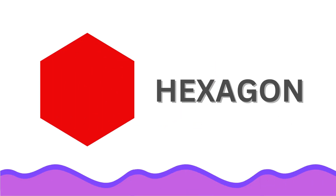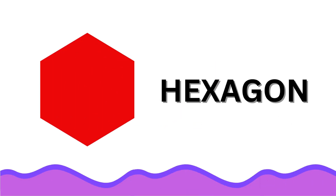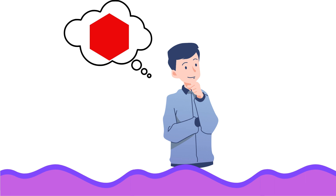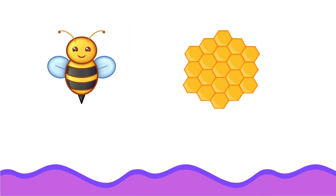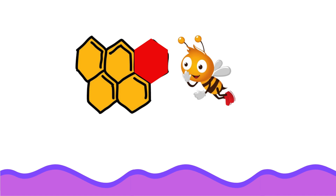The shape we are seeing is hexagon. Can we find some hexagon shaped things around us? A honeybee, a honeycomb — oh, it is hexagon in shape.